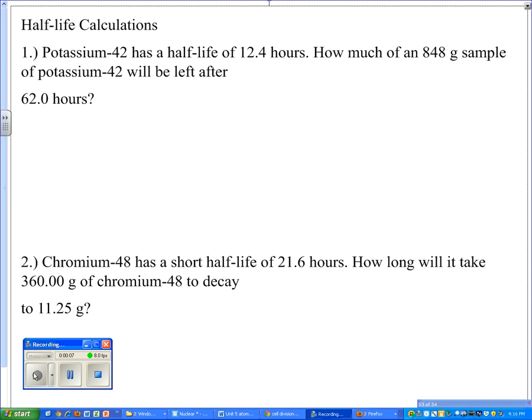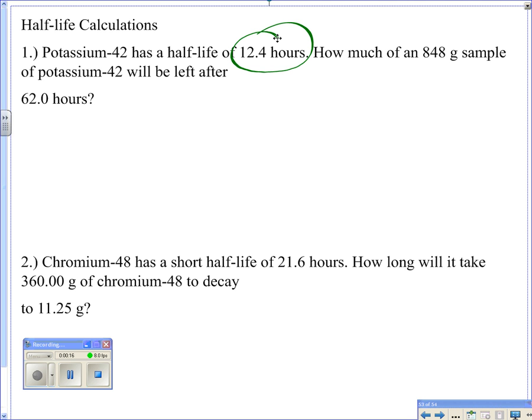When you see an isotope given, potassium-42, ignore the 42, it's part of its name. So what matters is that you know what the half-life is, and you know how much you start with, and you know how long they want to look at the decay.